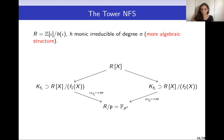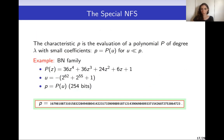Another variant is the Tower Number Field Sieve (TNFS), where the setup is very similar to NFS but extra algebraic structure is added in order to lower the complexity. Another variant is the Special Number Field Sieve (SNFS), where the difference comes from the characteristic p, which is defined as the evaluation of a polynomial of some degree lambda with small coefficients. In this case, p has this special form, and in this particular setup there is an algorithm with lower complexity than classical NFS.